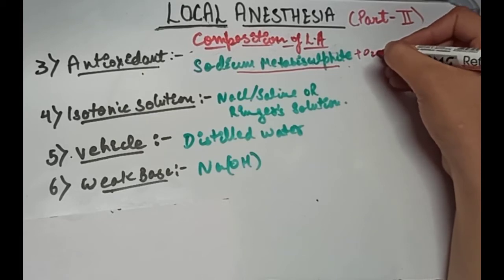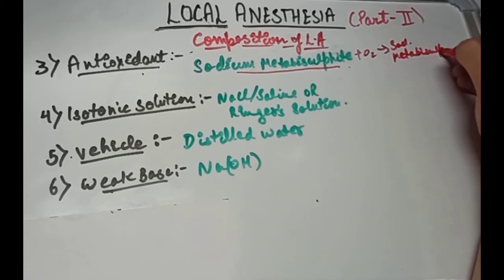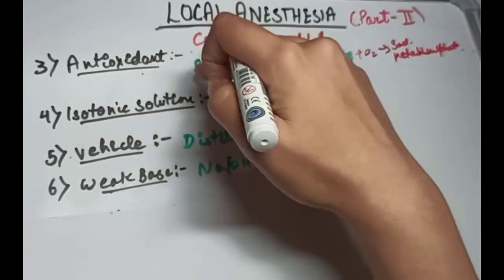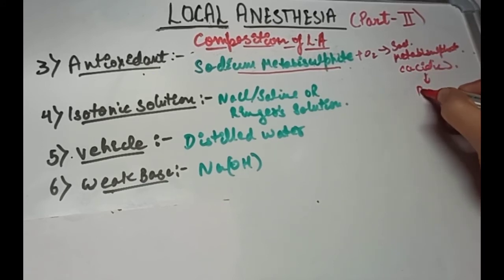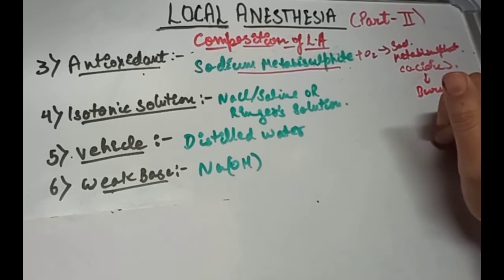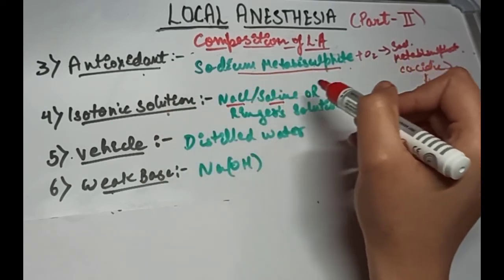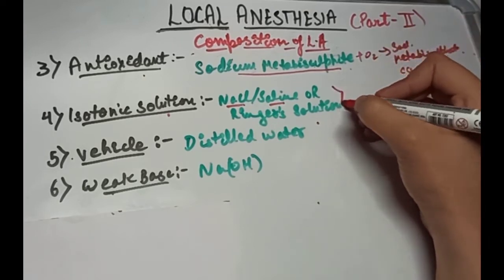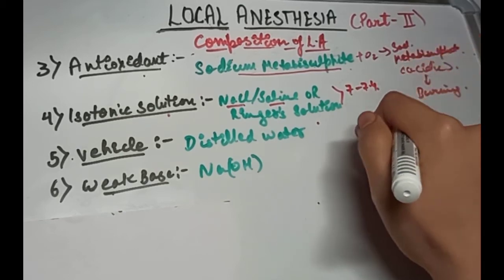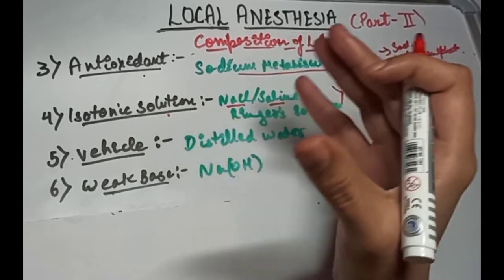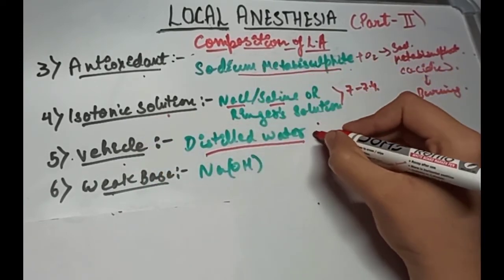Sodium metabisulfite combines with the oxygen available to form sodium metabisulfate, and hence acting as an antioxidant or a reducing agent. But the sodium metabisulfate formed is acidic, thereby leading to burning sensation and discomfort to the patient. So now we add the isotonic solution, that is sodium chloride or normal saline or ringer solution whose pH is similar to the body fluids, that is 7 to 7.4, thereby patient discomfort at the injection is minimized. Now we need something as a vehicle to carry this solution and for dilution. So we use distilled water as the vehicle for the LA solution for dilution and increasing the volume of the LA.